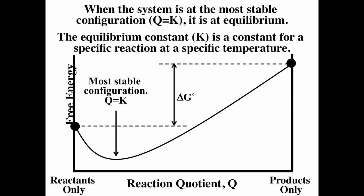The reaction quotient Q is used to monitor the reaction. When we have only reactants, Q is zero; when we have only products, Q is infinite. As the reaction proceeds, Q changes, while K defines the minimum — the most stable configuration.